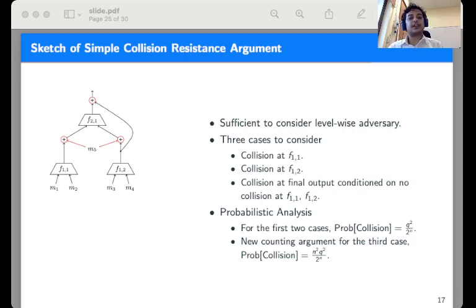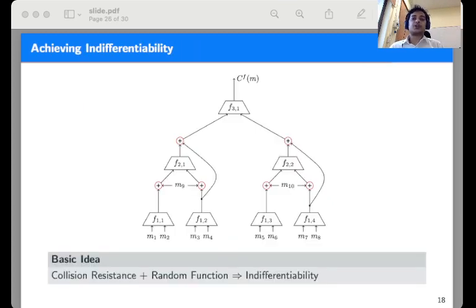The probability for the collision of the leaf node can be individually bounded by q^2 by 2^n. Whereas for the third condition we give a new counting argument where we prove the collision probability conditioned that no collision at the leaf can be bounded by n^2 q^2 by 2^n. Once the collision probability is settled, then like the previous case we get an intermediate indifferentiability result. We take two 5n to n-bit ABR construction and add an independent random function as envelope.